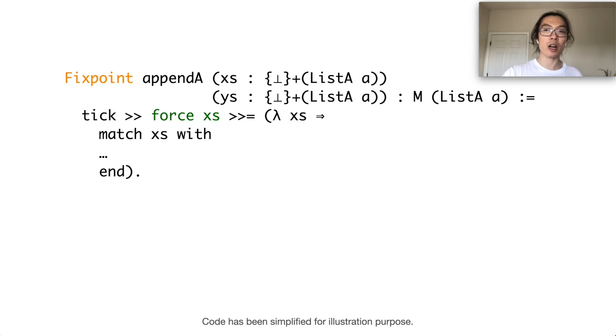After that, we want to do a pattern matching on the function's first parameter xs. A problem here is that xs can be undefined on some branches because we conjecture that xs is not in demand on those branches. Therefore, we will apply the force operation to xs.